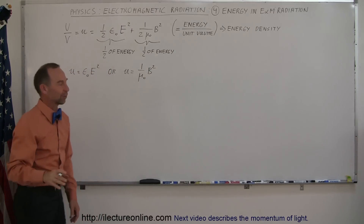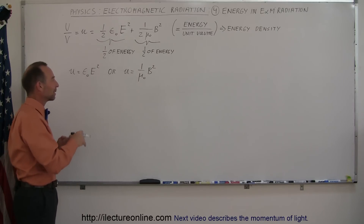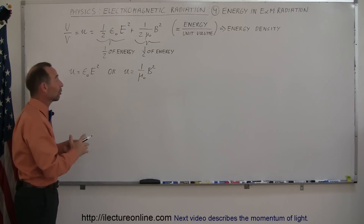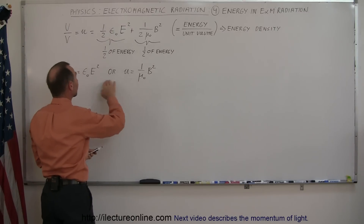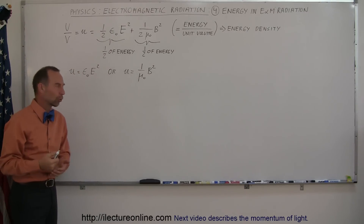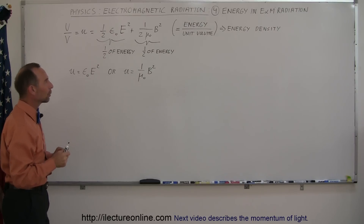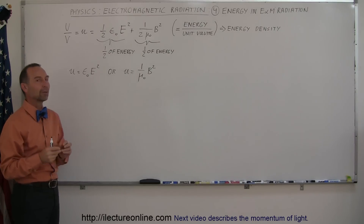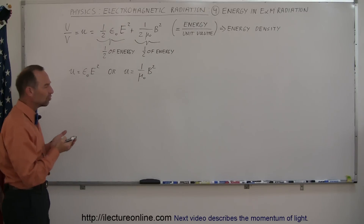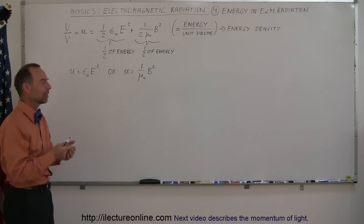There's no such thing as electromagnetic radiation with only electric field oscillations or only magnetic field oscillations, but sometimes you're given problems in terms of only the B-field oscillations or the electric field oscillations. Now we're going to relate energy density to the intensity of light.